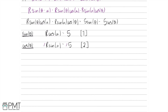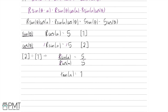To solve for α, let's divide equation 2 by equation 1. So r sin α over r cos α equals 5 over 5. The r's cancel, and sin α over cos α is tan α, and 5 over 5 is 1. So tan α equals 1, which means α equals inverse tan of 1, giving 45 degrees.